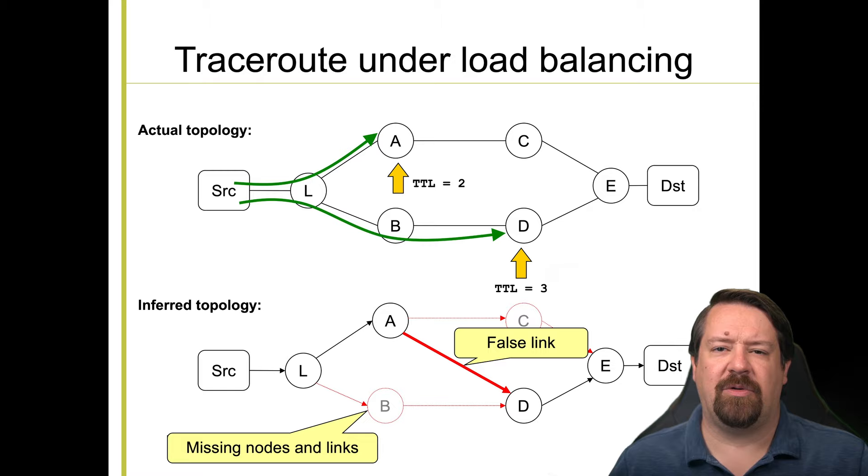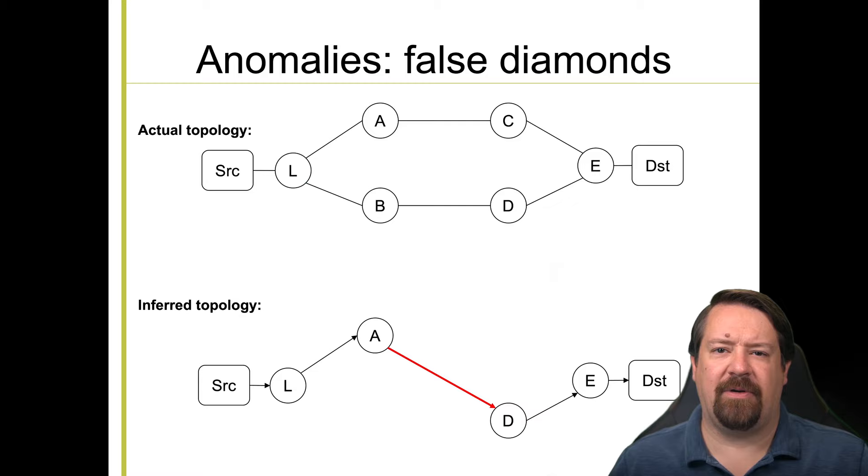If we do this multiple times, or use multiple probes per TTL, the error induced may be somewhat different. So we have the topology that we got on the first run, but assuming we also discover the true links between L and B, and B and D, we would now infer a false diamond. So the top path shows the true diamond caused by load balancing, but we've inferred a diamond that is incorrect, where it looks like the aggregation is happening at node D. Further runs may yield another false link between B and C, and another false diamond, and note that we still haven't discovered the link between A and C.